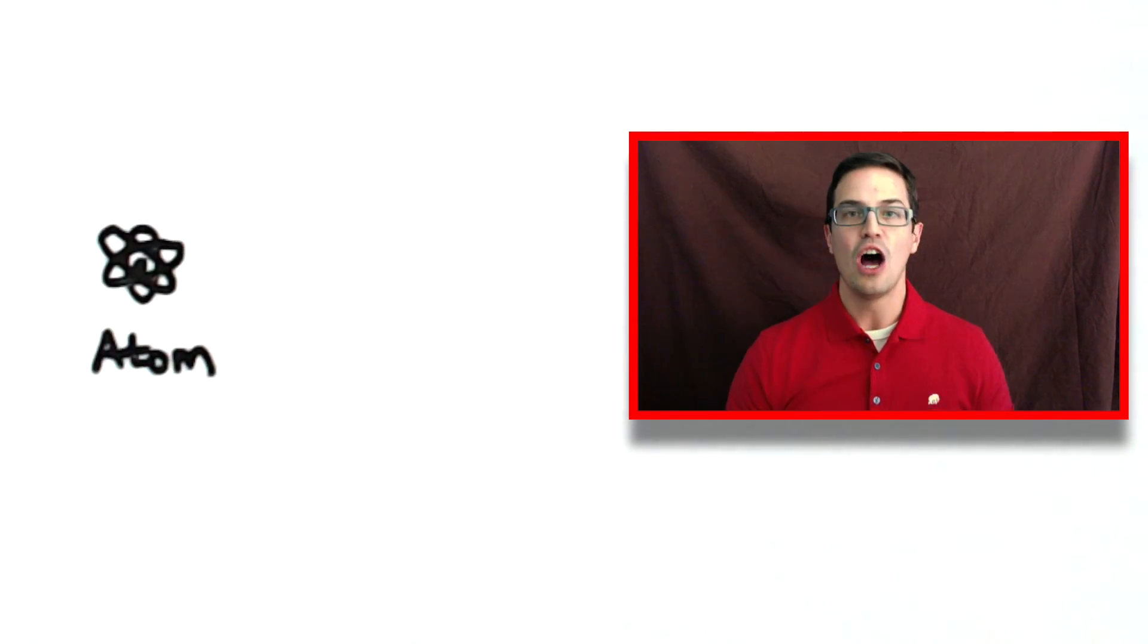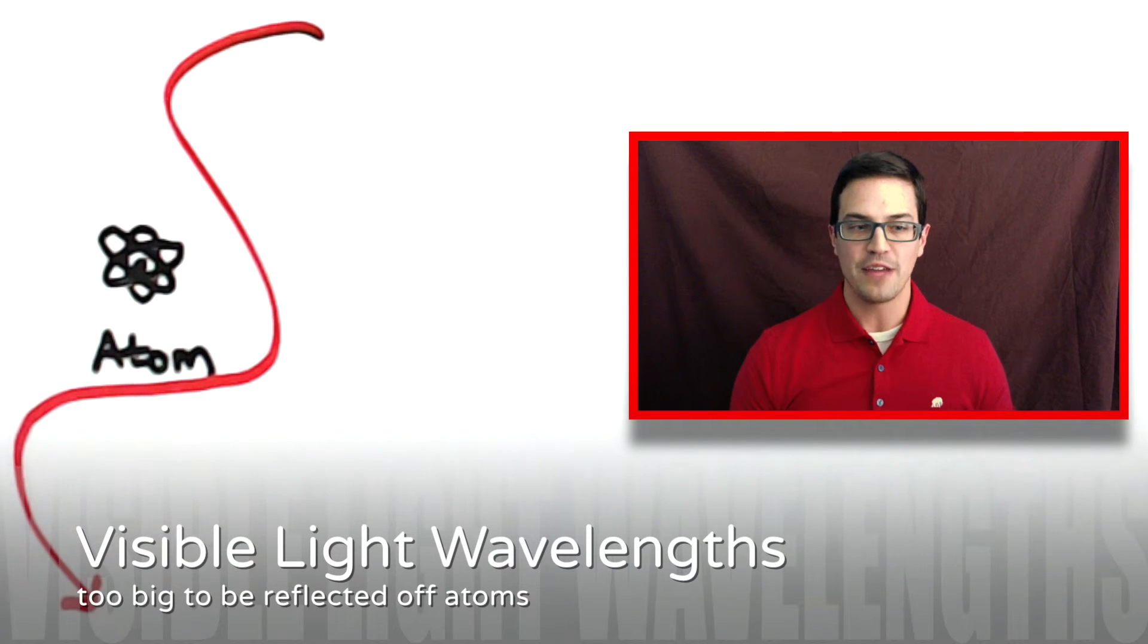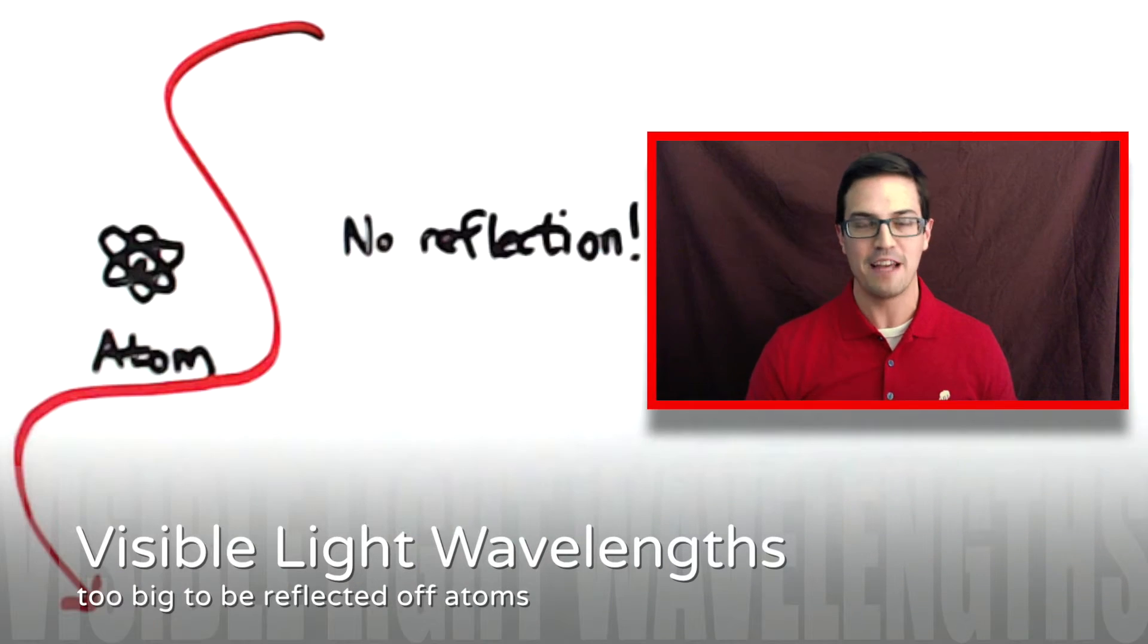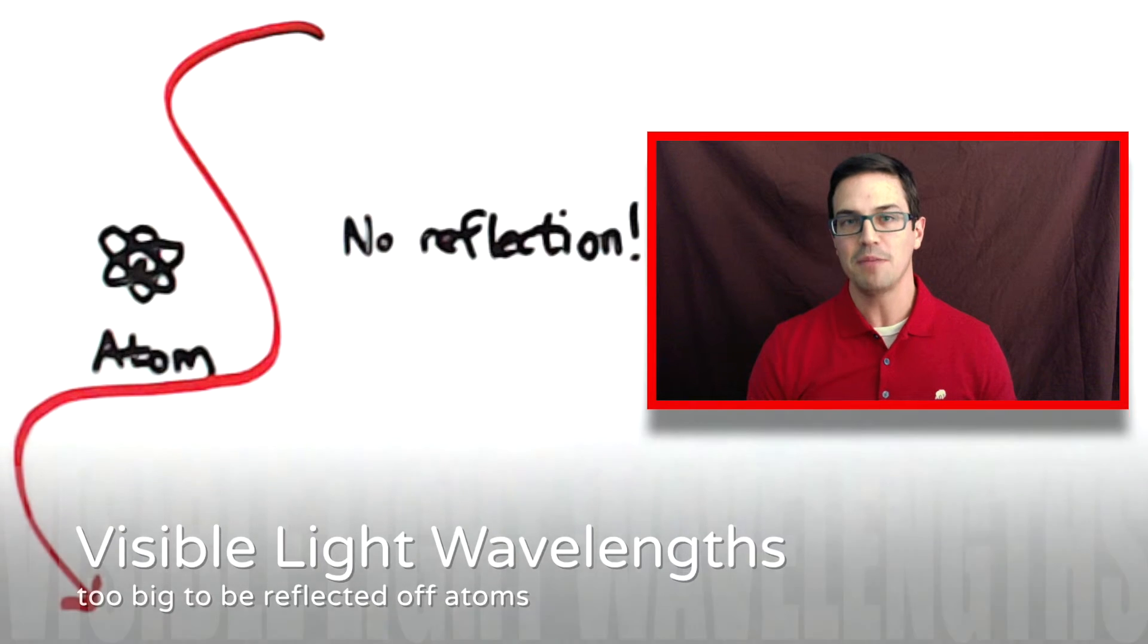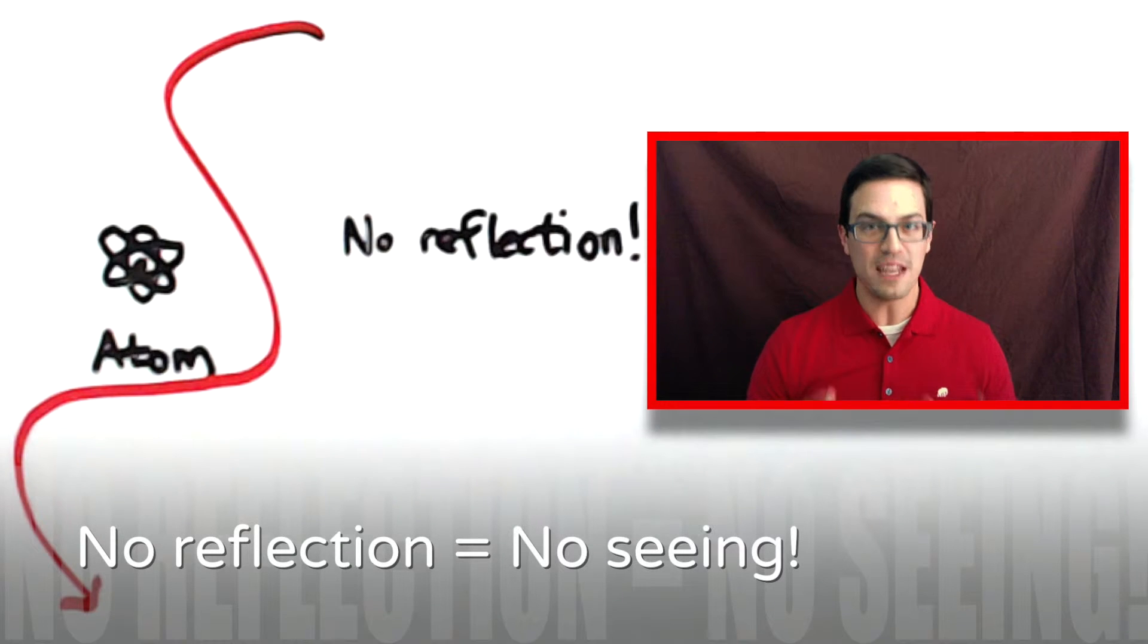The problem is these wavelengths of visible light are too big for the atom. So the atom is never actually able to reflect any of that visible light so that it can be seen by someone else. This means that humans as we know them will never be able to see atoms, simply because our visible light is much too big for an atom.